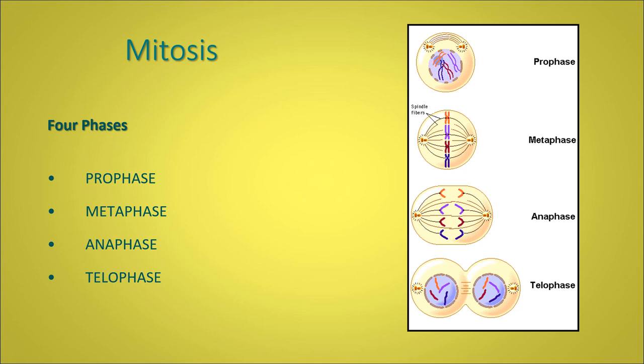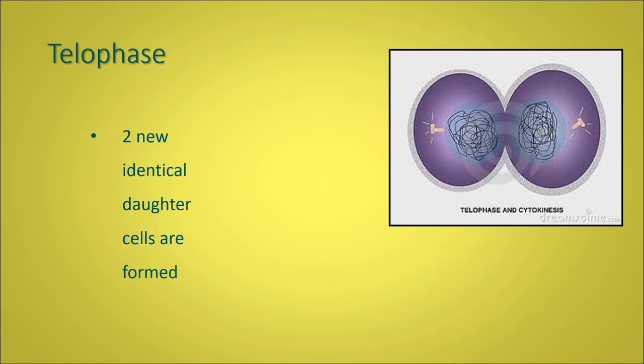And here we have it, the fourth phase, telophase, where two new daughter cells are produced. I've attached what I think is a really good video clip next to this slide, which I think gives you quite a good understanding of the process of mitosis. It is a very complicated subject, but we really do only need to know the bare bones of the process of mitosis. So have a look and hopefully it will clarify what I've been trying to explain.